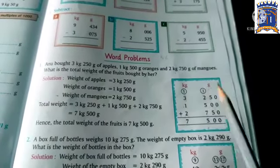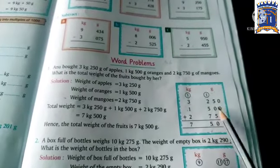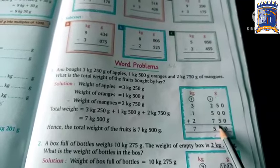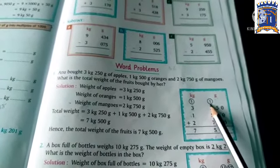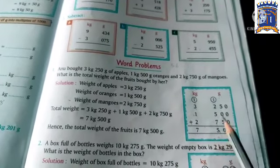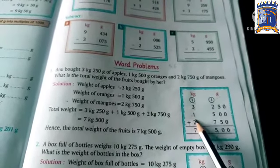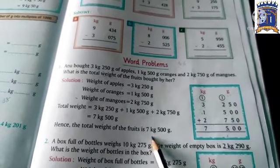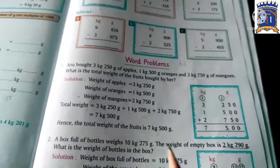kg gram: 3, 250 grams. Now we will solve this way. 0 plus 0 plus 0 is 0. 5 plus 5 is 10, 0 will be here and 1 carry over. 2 plus 1 is 3, 3 plus 5 is 8, 8 plus 7 is 15. 5 will be here and 1 carry over. 3 plus 1 is 4, 4 plus 1 is 5, 5 plus 2 is 7. So how much is it? 7 kg 500 grams.